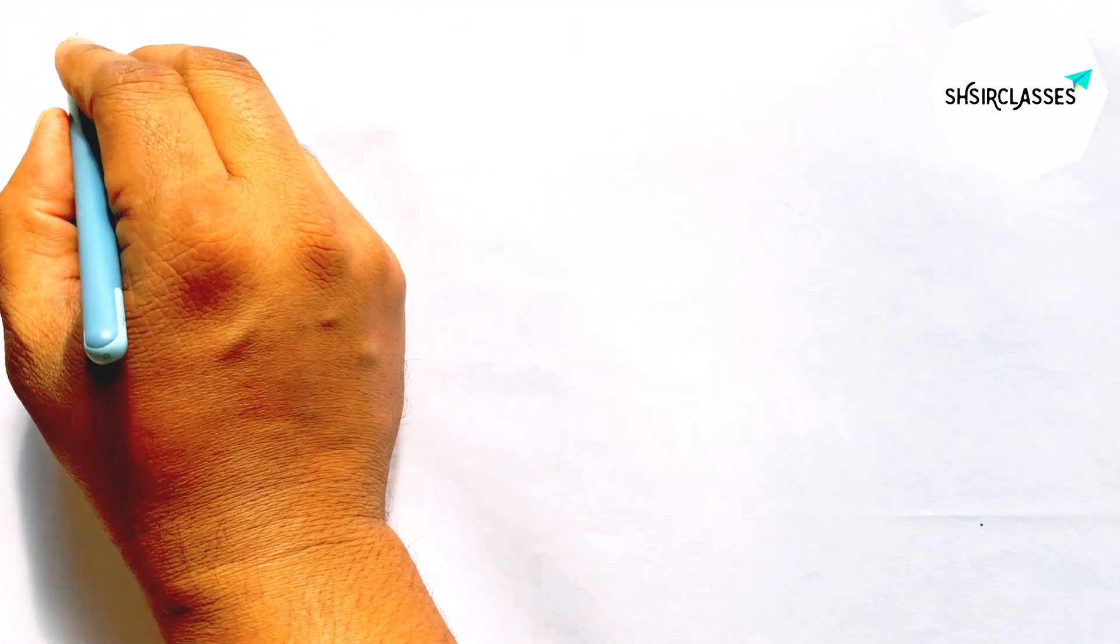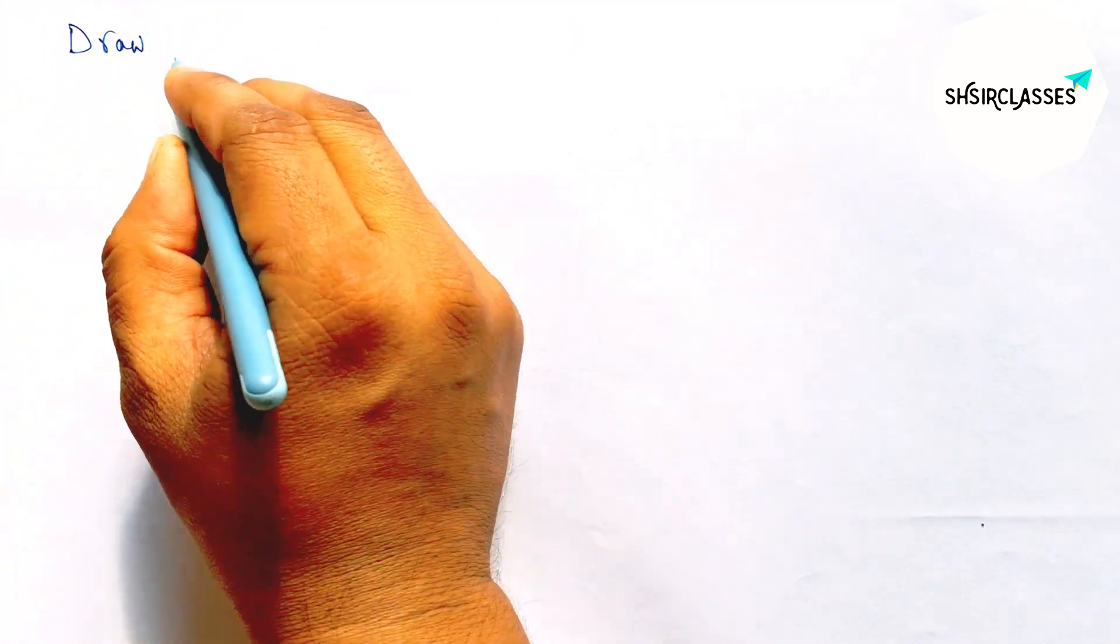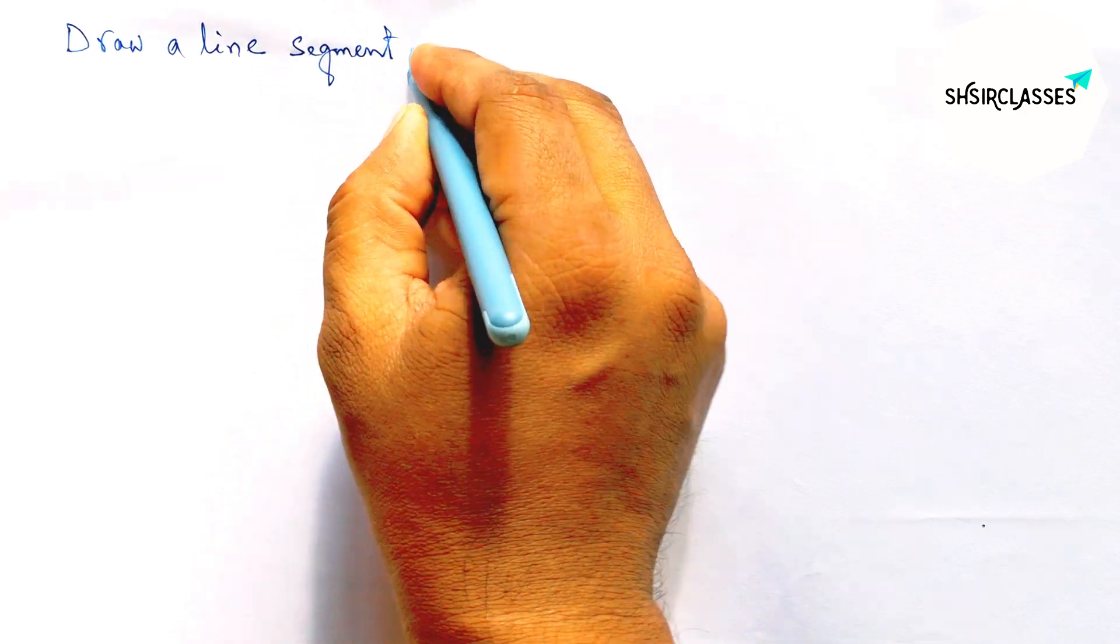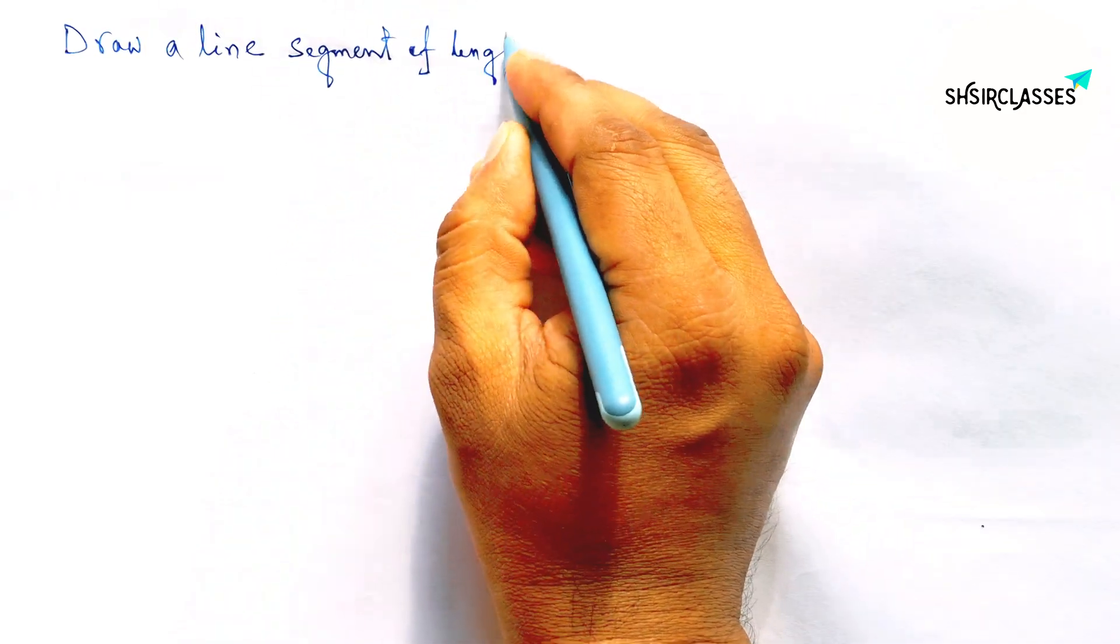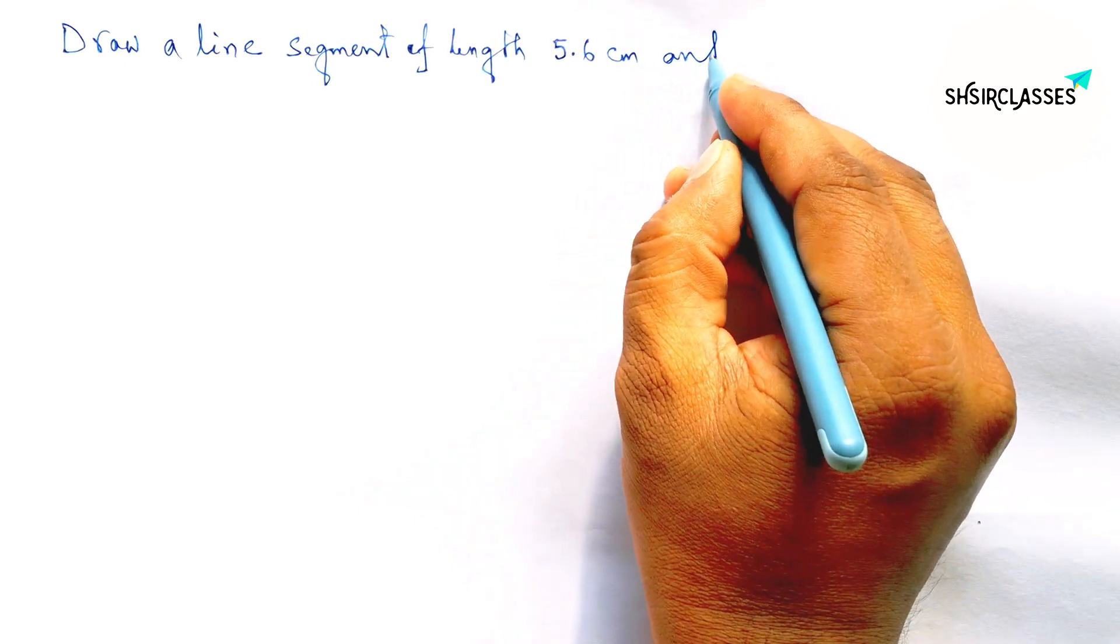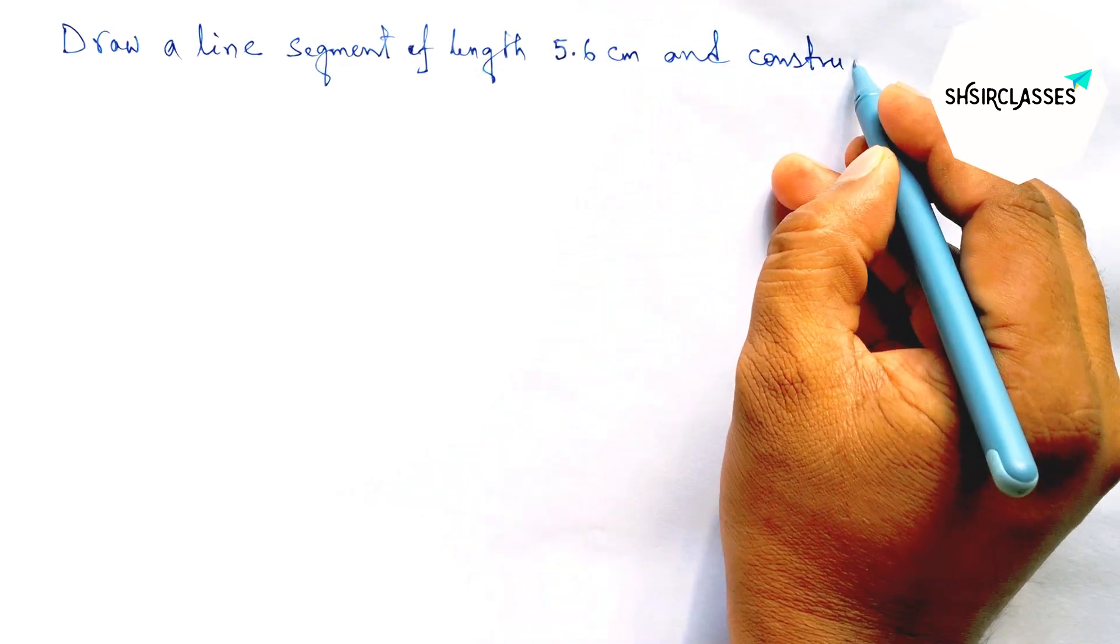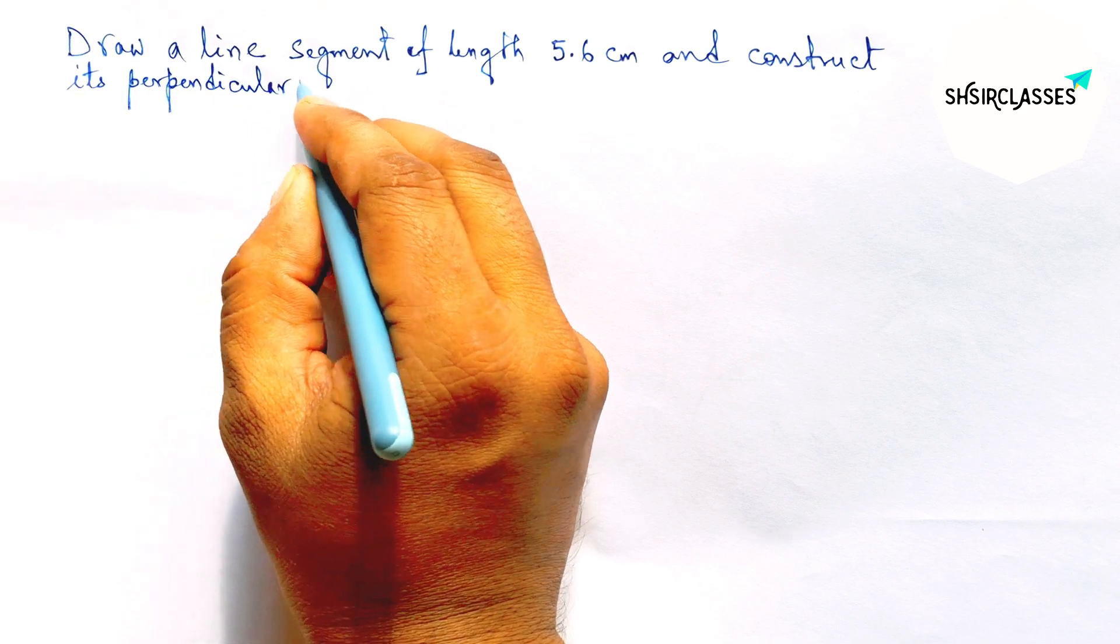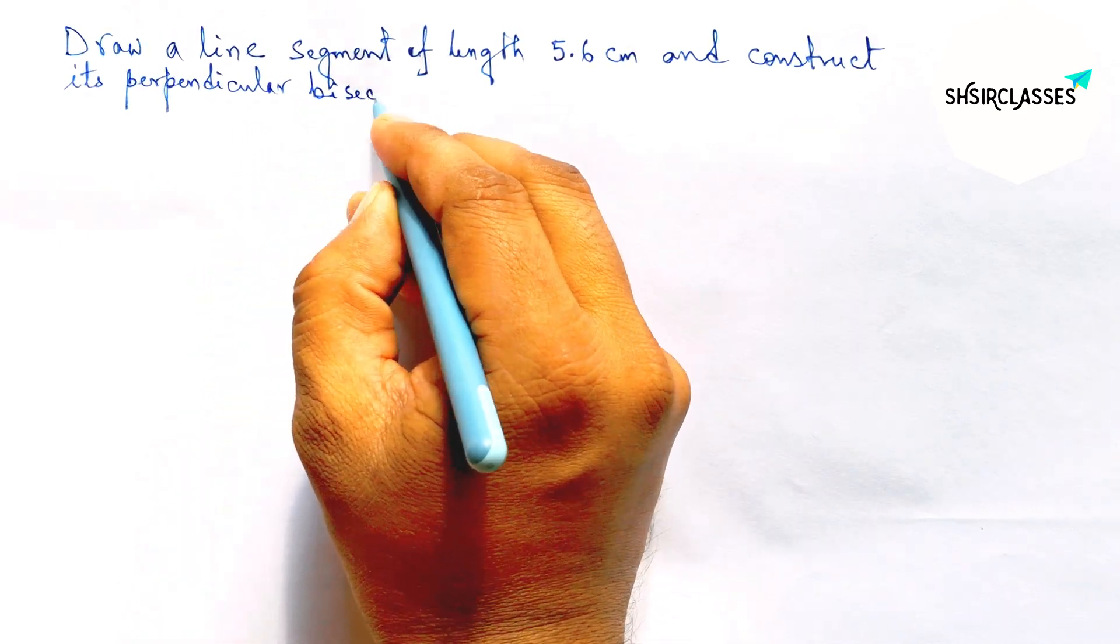Hi everyone, welcome to Sai Said from Classes. Today in this video, draw a line segment of length 5.6 centimeters and construct its perpendicular bisector to the given line in an easy way. So please watch the video till the end.